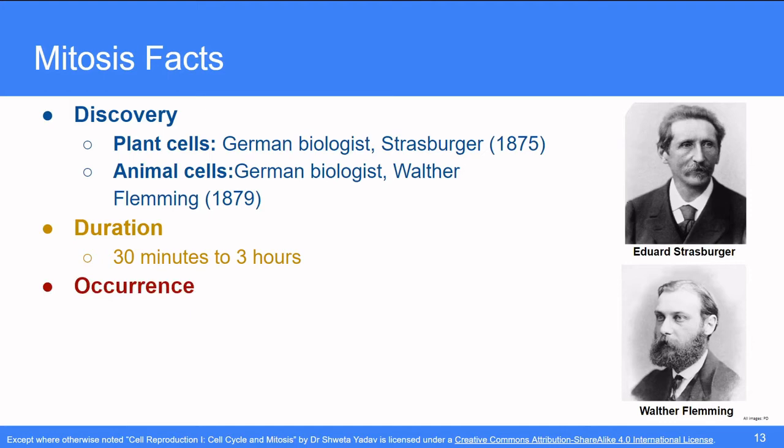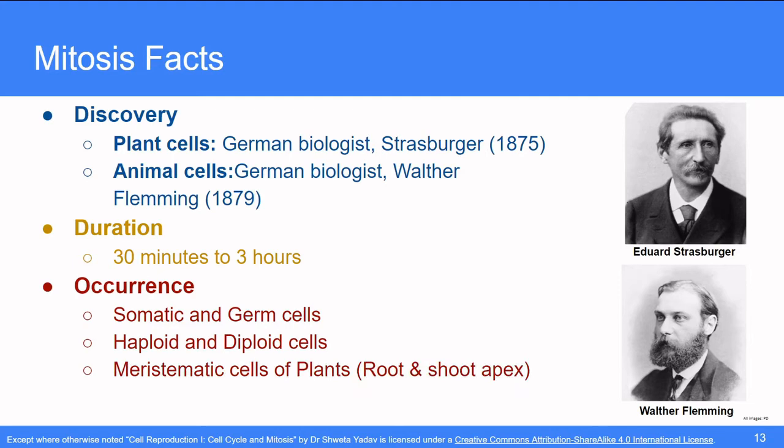Mitosis occurs in a vast variety of cells. It can occur in somatic cells during cell growth and germ cells during multiplicative phase of gametogenesis. Mitosis can occur in haploid and diploid cells both. It occurs in the meristematic cells of the plant's root and shoot apices. In man particularly it occurs in skin, bone marrow and embryonic tissues. Onion root tips are the best material for studying mitosis as they have a clear visualization of the different stages.